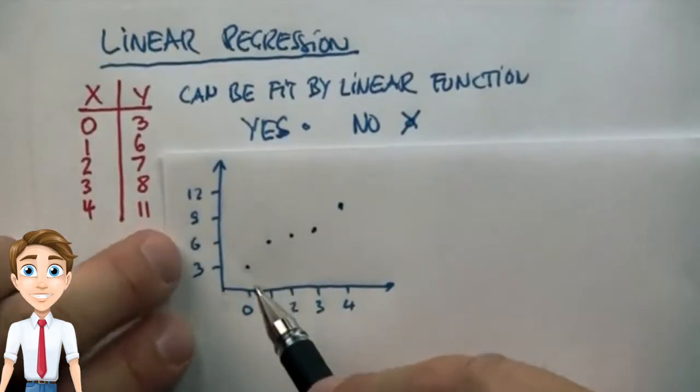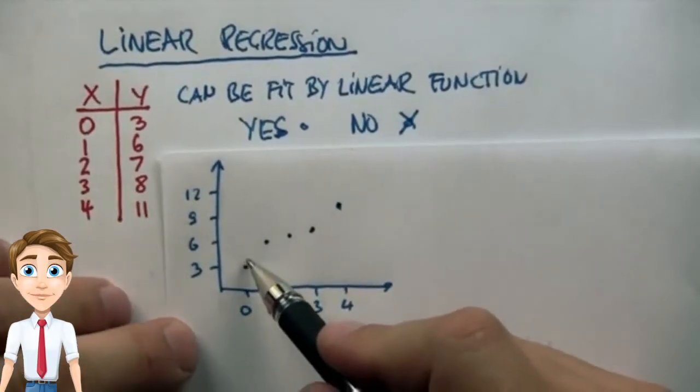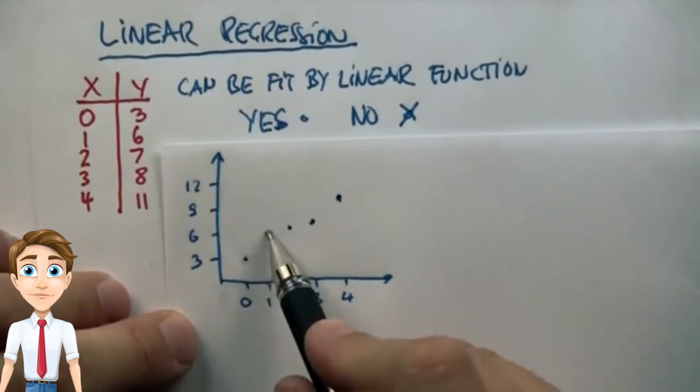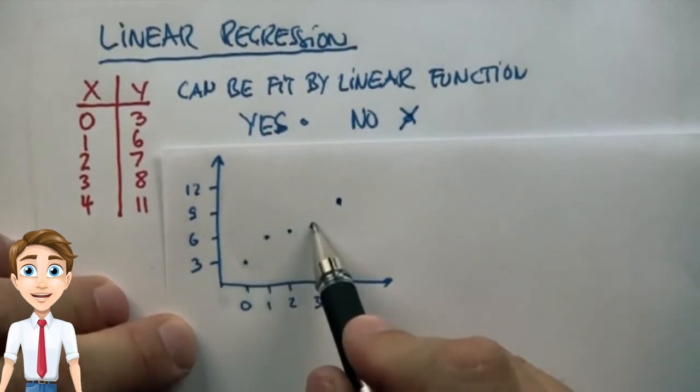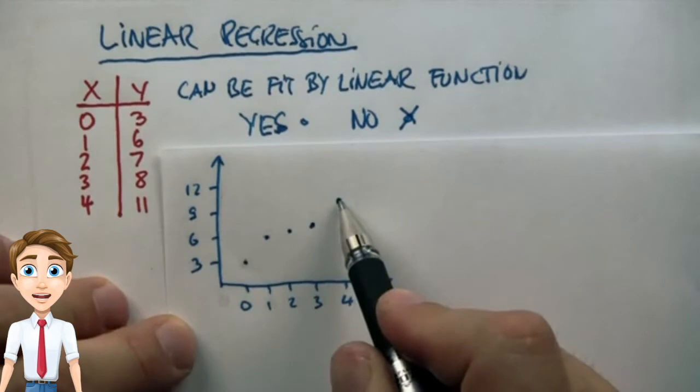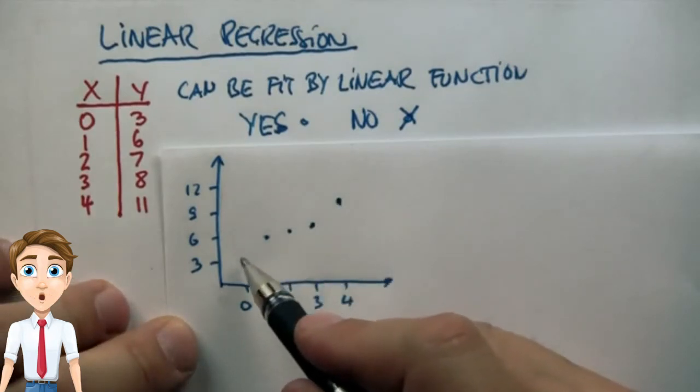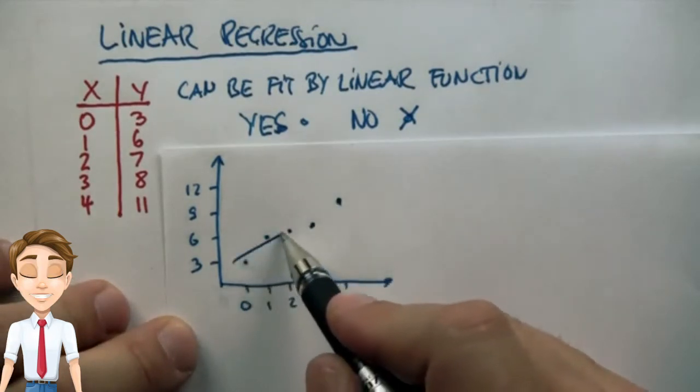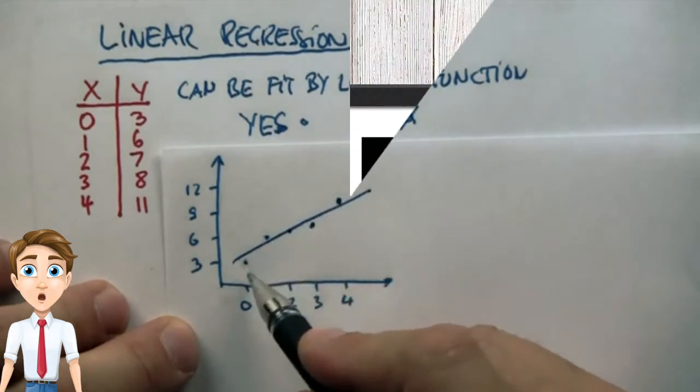We can see the same if we plot the data points. Over here we couldn't fit a linear function but it's very shallow, whereas those points over here have a much more steeper situation, so any linear function would probably miss these points in between.